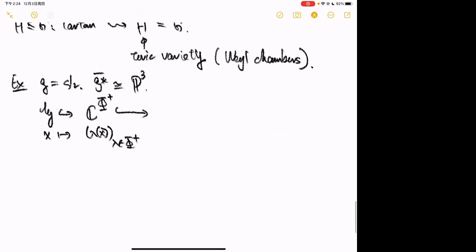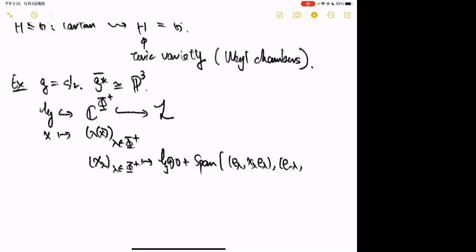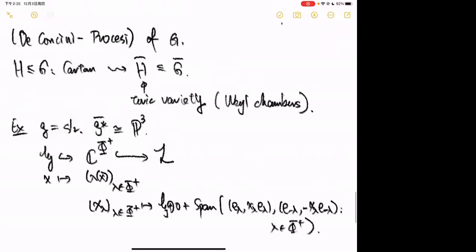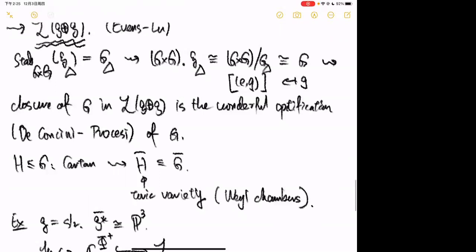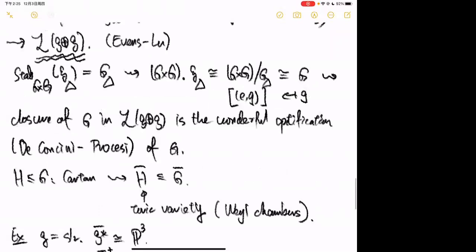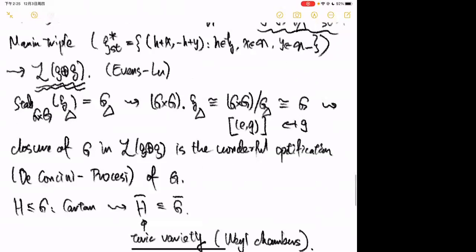To understand H, I first look at the embedding H → ℂ^{Φ⁺} sending x to (λ(x))_{λ ∈ Φ⁺}, where Φ⁺ means positive roots. Then ℂ^{Φ⁺} embeds into L by sending the tuple (x_λ) to H ⊕ {0} plus the span of (e_λ, x_λ·e_λ) and (e_{−λ}, −x_λ·e_{−λ}) for each positive root λ.